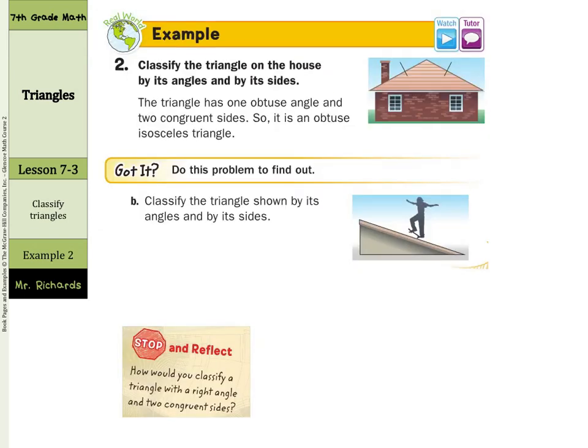Classify the triangle on the house by its angles and by its sides. Well we have two equal sides which are right here and here. And we have an obtuse angle here. So it's an obtuse isosceles triangle.